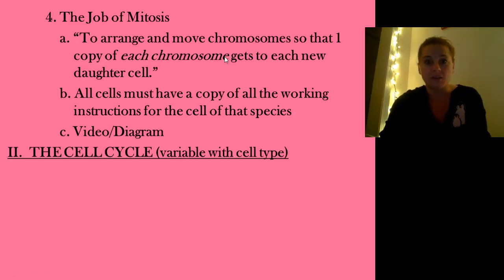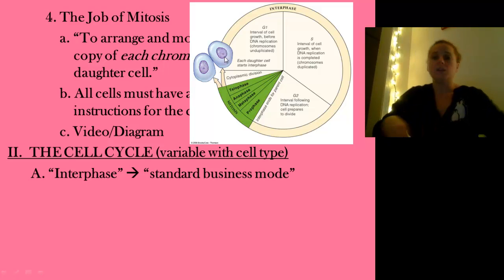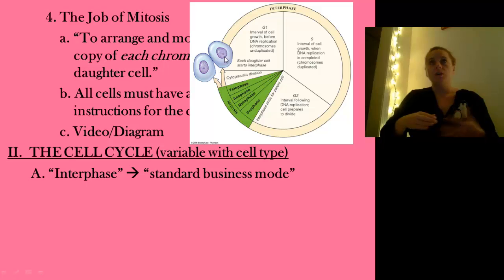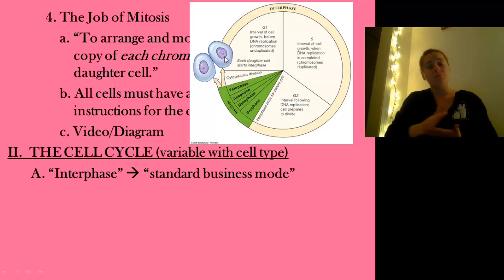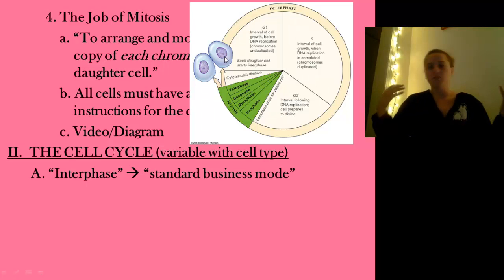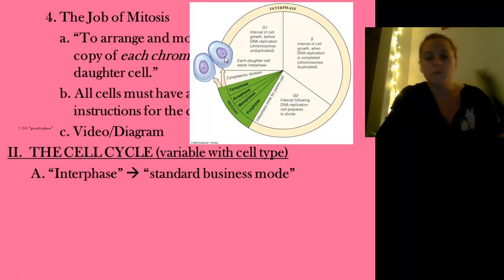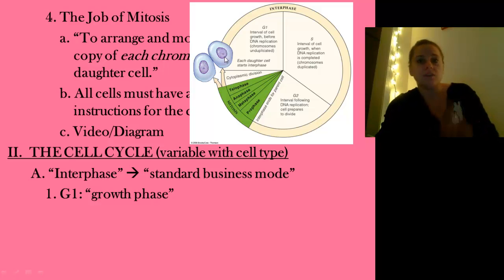Let's talk about the cell cycle. It's not exactly a life cycle of the cell, but there are certain stages we can identify as a cell goes through different points in time. The cell cycle begins with interphase — the cell doing its job, just living in its normal business mode, not yet getting ready to divide. We can break interphase down into three moments.